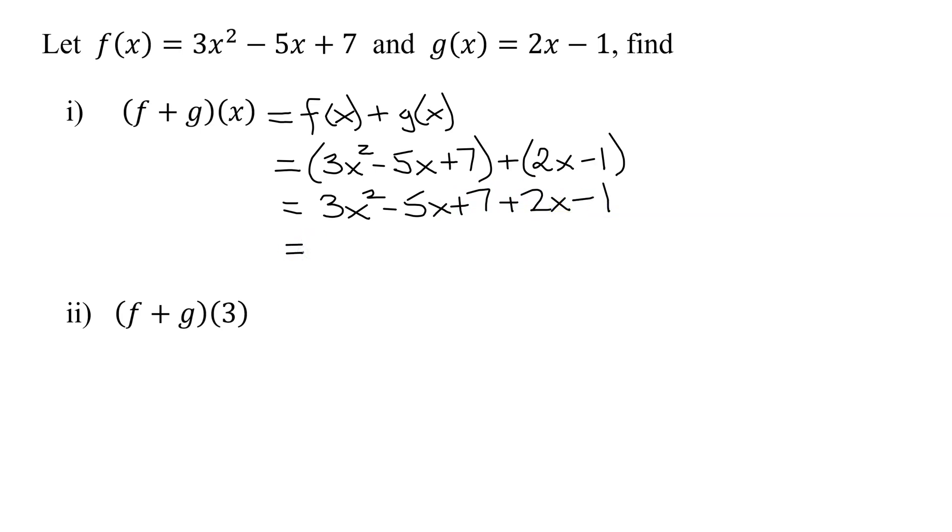And now to simplify it, all I have to do is look for like terms. Is there a like term that goes with 3x²? Are there any other x²s? No. So I'm going to have 3x². Now to combine like terms, I have -5x + 2x. -5 + 2 is -3x. And then lastly, I have a +7 and a -1. So combine those like terms. 7 - 1 is 6. So I have +6. So my sum function (f + g)(x) is equal to 3x² - 3x + 6.